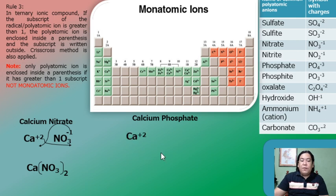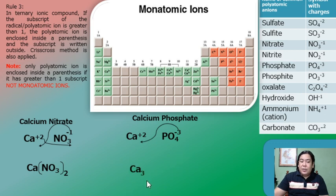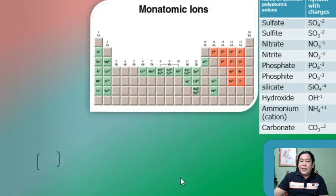Another example: calcium phosphate. Calcium ion is Ca²⁺ and phosphate is PO₄³⁻. Crisscrossing gives calcium a subscript of 3. Even though the subscript of calcium is greater than 1, it is not placed in parentheses because only the polyatomic ion is enclosed in parentheses, not the monoatomic ion. The formula is Ca₃(PO₄)₂.